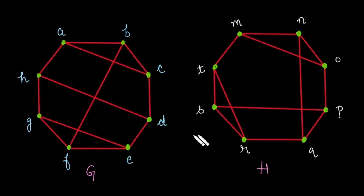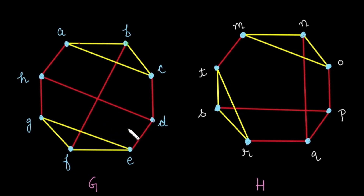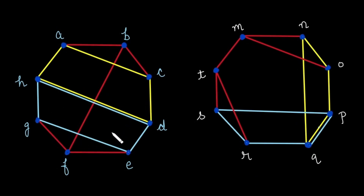First, find the simple circuit of length 3. Does graph G have any simple circuit of length 3? Yes, graph G has two simple circuits of length 3, and the same is true for graph H — there also exist two simple circuits of length 3. Now check for simple circuits of length 4, making sure their count is the same in both graphs if they are isomorphic. Yes, there exist two simple circuits of length 4 in graph G.